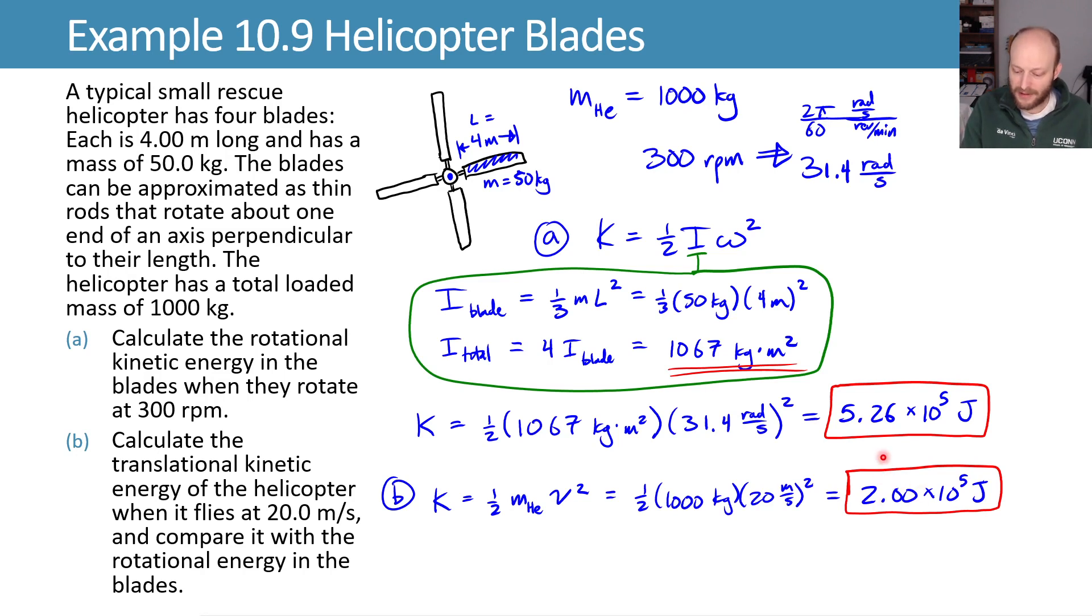Comparing these, we can see that 2 is less than 5.26. They have the same powers of 10 there. So it's a little under half. It looks like the kinetic energy. What does that mean? It means that there's actually more kinetic energy in the spinning blades than in the helicopter moving at you.